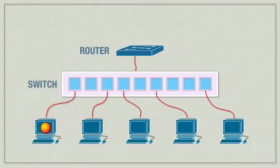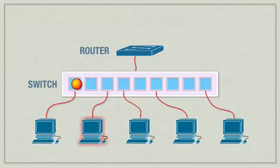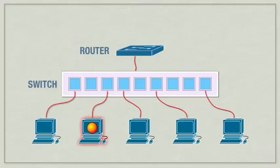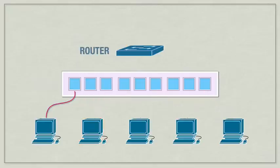Switches are the next step up. With a switch, with that same scenario where I want to send data from one computer to another, I send it to the switch, but instead of sending it to all ports, it only sends it to the one port it needs to go to. From there, it goes to the computer where it's needed — a direct connection, much less traffic on the network.